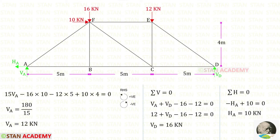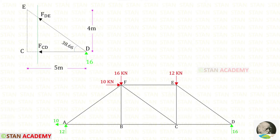We have to find the horizontal reaction HA and the vertical reactions VA and VD. In the method of joints I have already explained how to find them — you can click the link in the description section and watch the video. Now I am going to make the first section. I can make the section anywhere in the truss, and for my convenience I am going to make the section here.